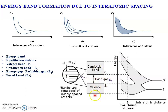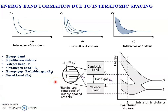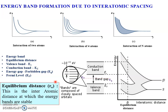These stable bands we can define as the valence band and conduction energy level. The important parameters here are: energy band, equilibrium distance, valence band, conduction band, energy gap, and Fermi level. For easy understanding, we draw these energy bands as rectangular energy bands. An energy band indicates a nearly continuous band of electronic energy levels in a solid — it is like a continuum. The equilibrium distance is the interatomic distance at which the energy bands are stable.